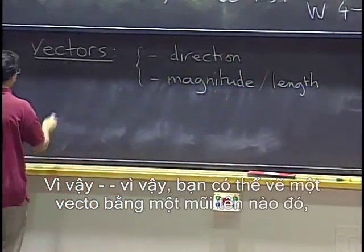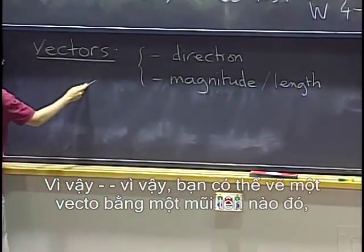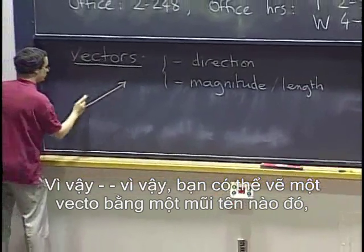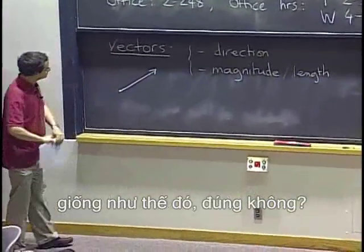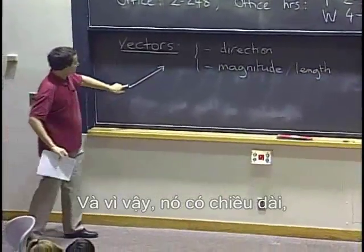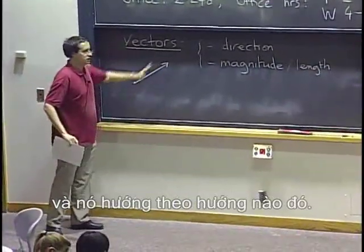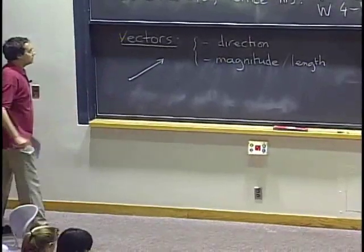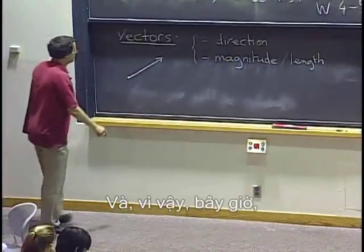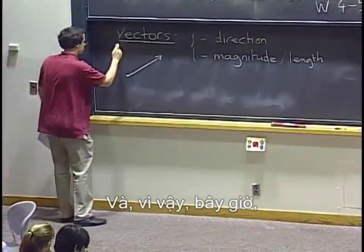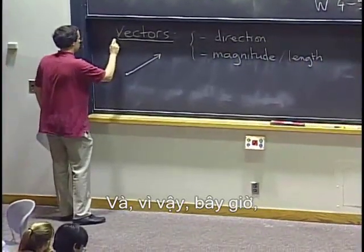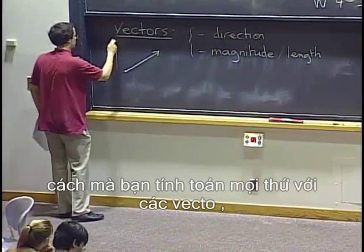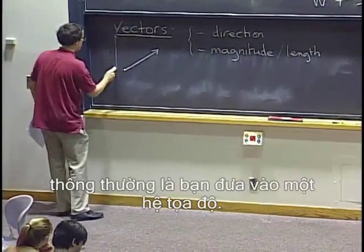So concretely, the way you draw a vector is by some arrow like that. And so it has a length and it's pointing in some direction. And so now the way that we compute things with vectors typically is by the way you draw a coordinate system.